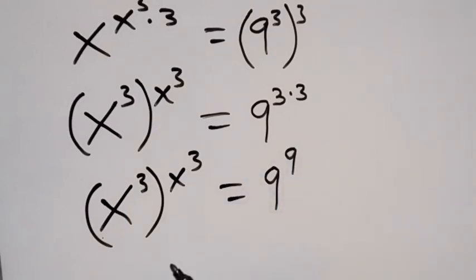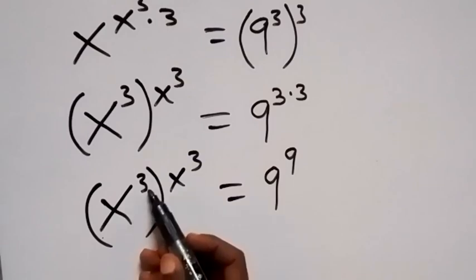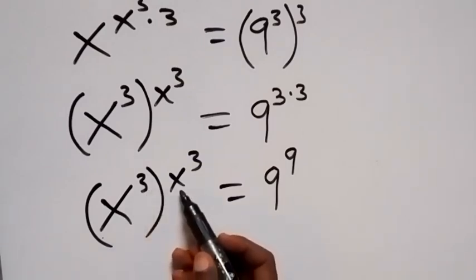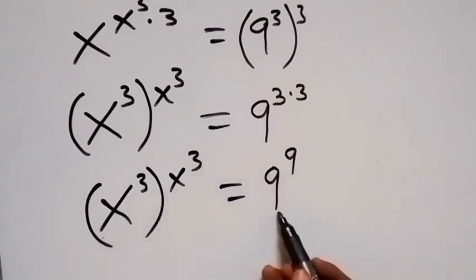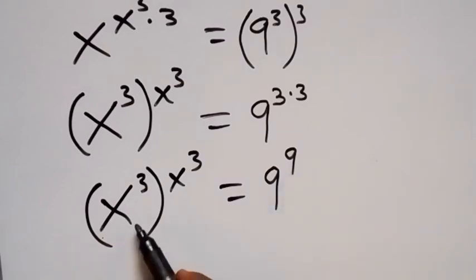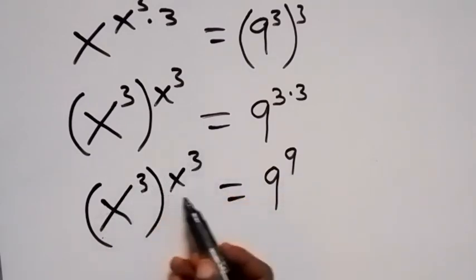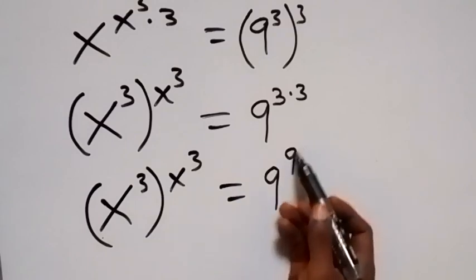When we look at the pattern, we have X raised to power 3 raised to power X raised to power 3, which equals 9 raised to power 9. This is the same number raising to power itself.